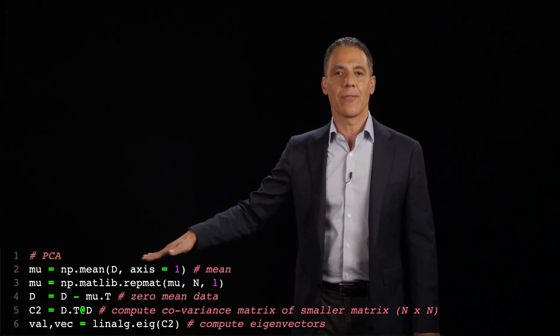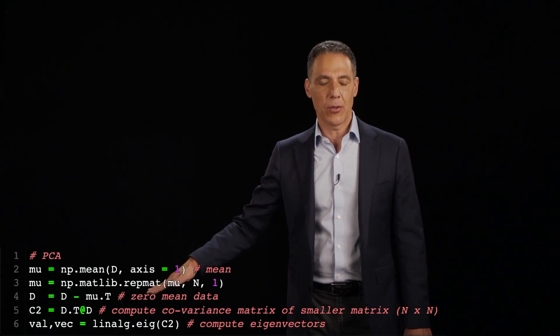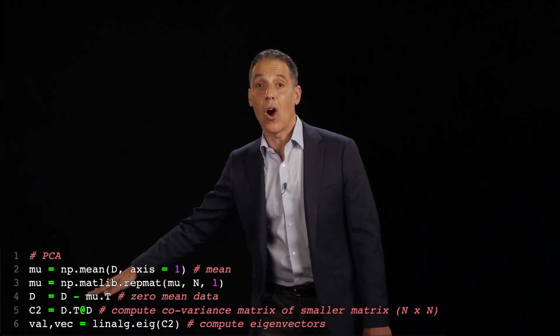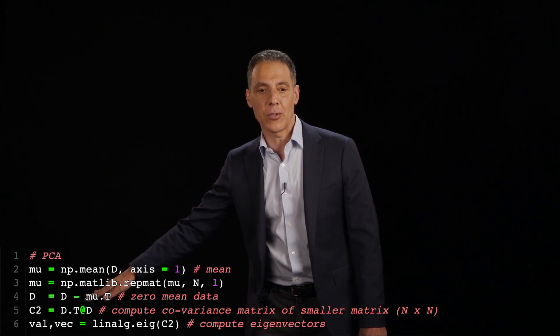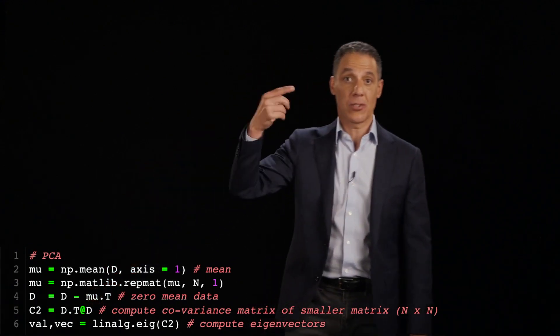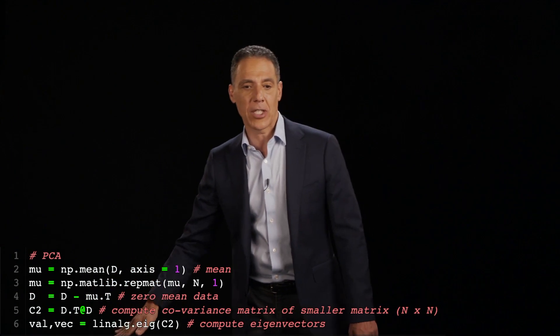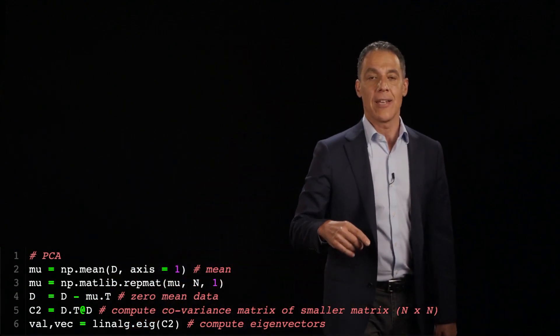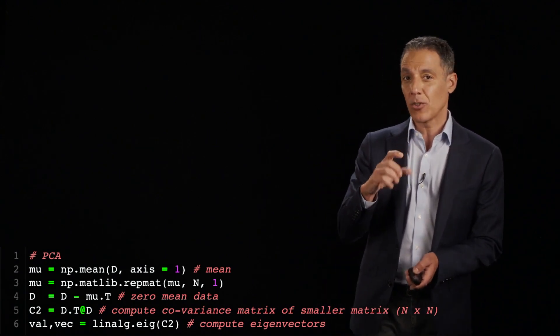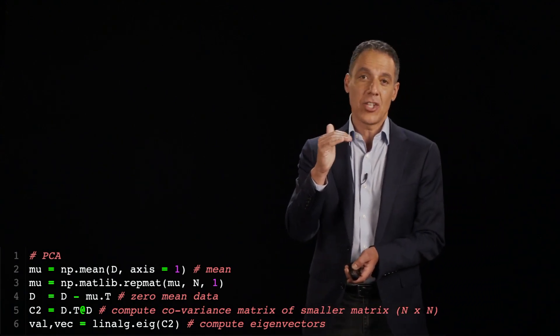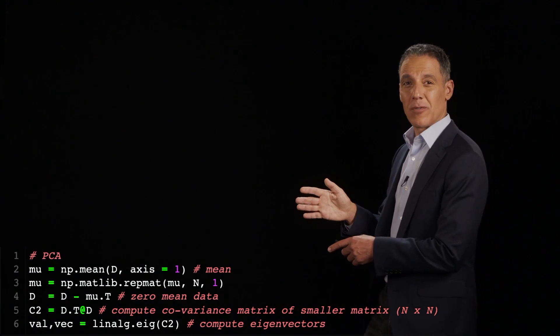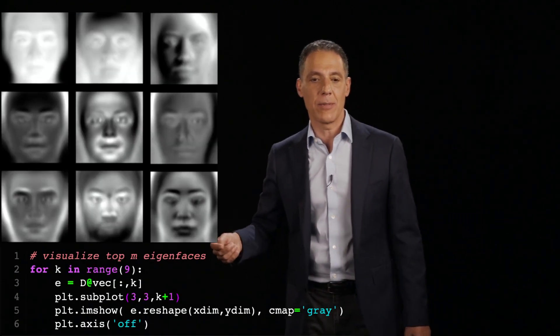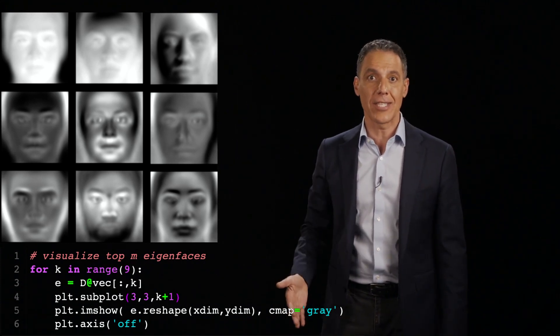So here comes PCA. We have to zero mean the data. I'm going to zero mean the data right here. I'm going to compute the wrong eigencovariance matrix, D transpose D, which has been transposed from before. And then I'm going to compute the eigenvectors and the eigenvalue of that matrix. Now again, those eigenvectors are only 3,300 and change dimensionality, but my data is in a 256 squared dimensional space. But I'm going to transform them as I did before. And I'm going to go ahead and just look at them.